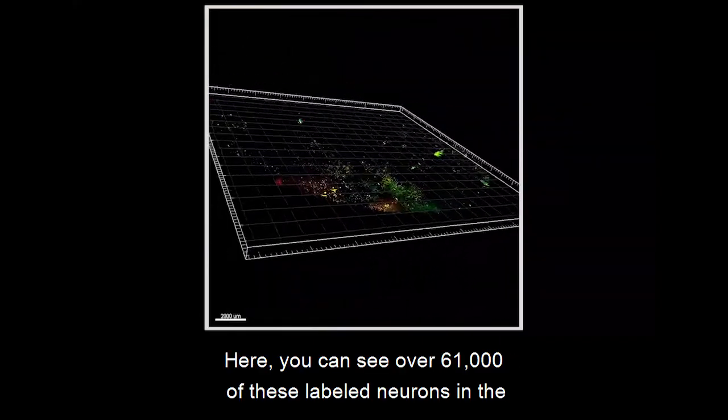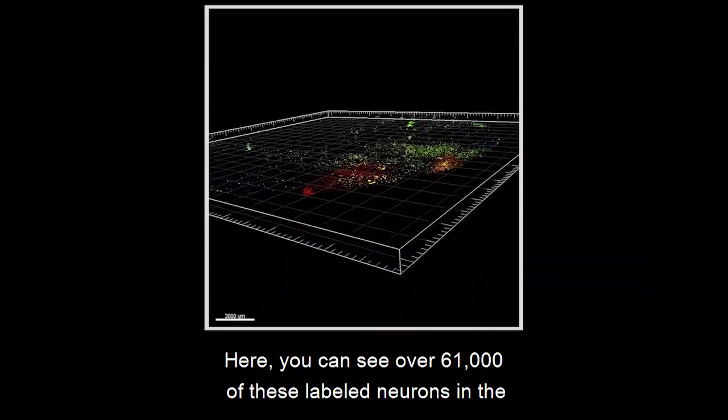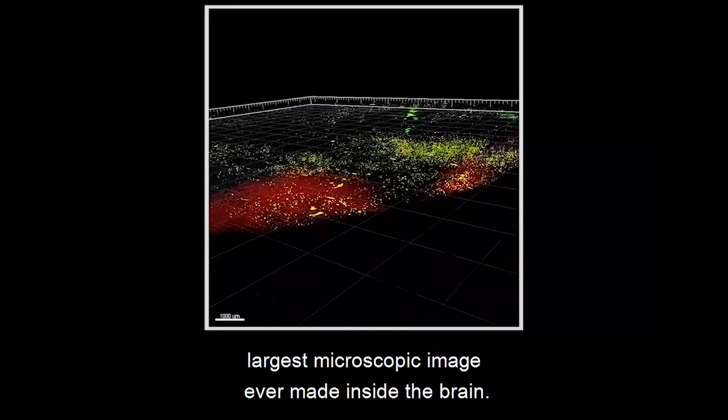Here, you can see over 61,000 of these labeled neurons in the largest microscopic image ever made inside the brain.